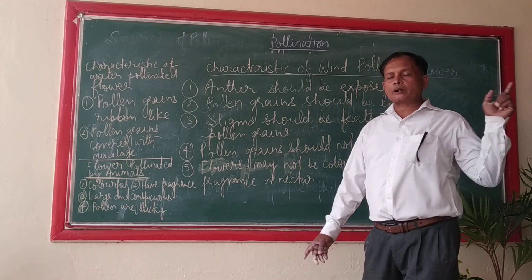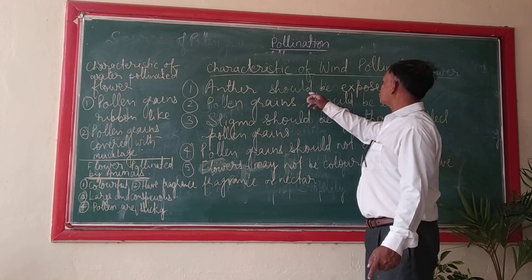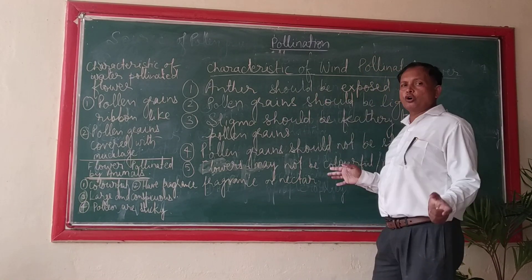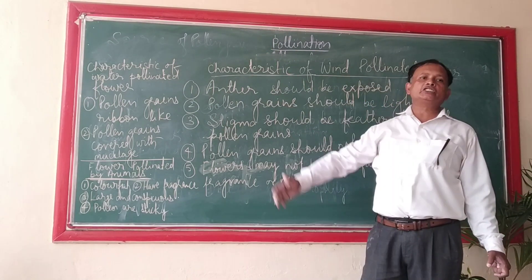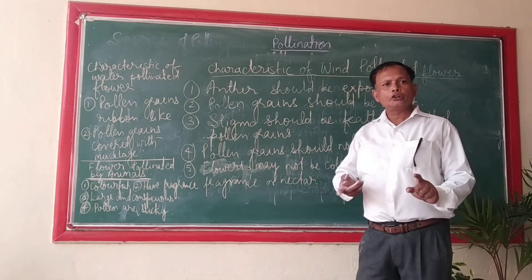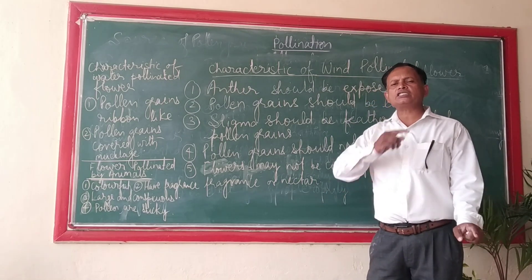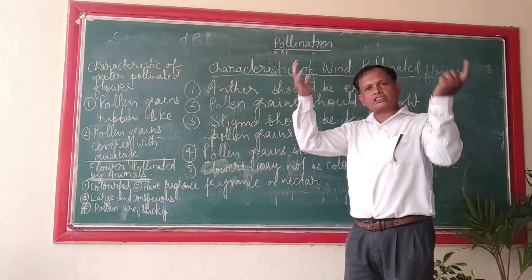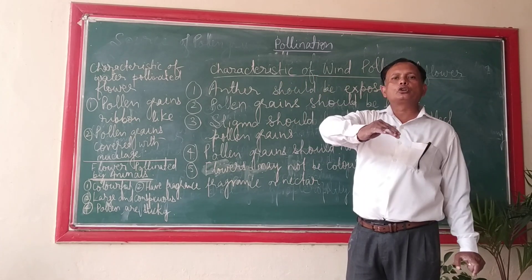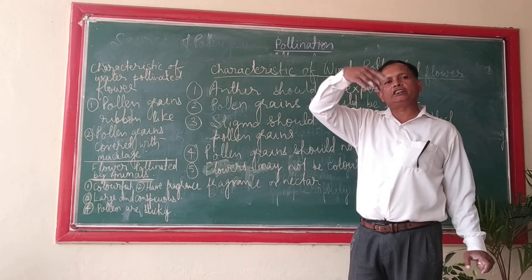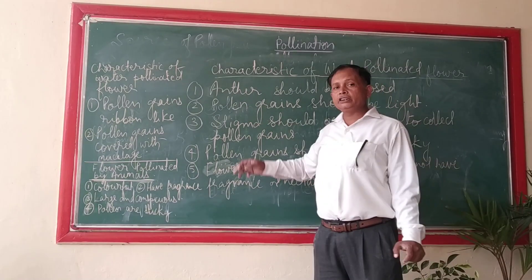The flowers which are pollinated by wind — their anther should be exposed so that the wind can blow the pollen grains from it. This is the first characteristic. If the anther is exposed, the strong wind will come and blow the pollen grains from the anther and deposit it on the stigma.